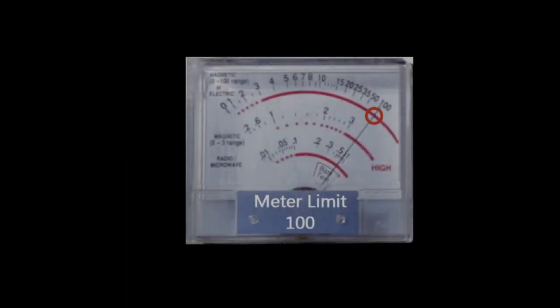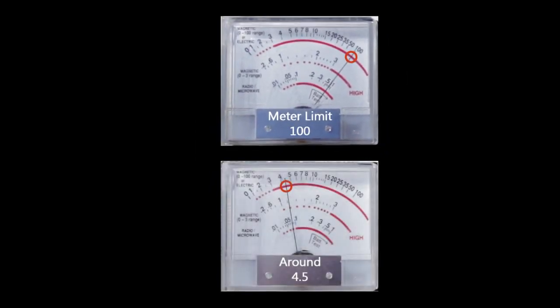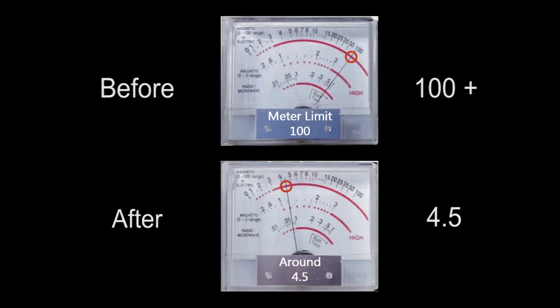It appears the mesh is neutralizing a large portion of the electromagnetic field. I believe the level of EMF from the unshielded meter probably exceeds the tri-field meter's limit. The difference between 100 and 4.5 is very substantial.